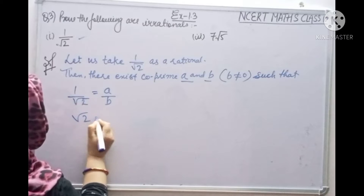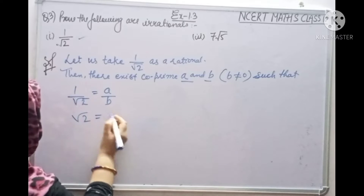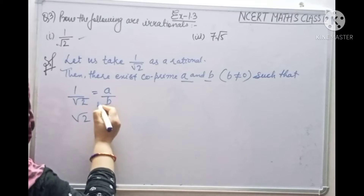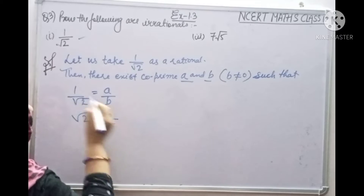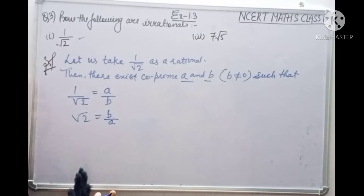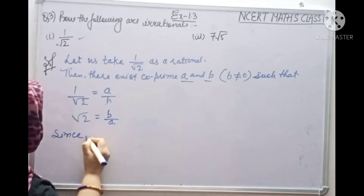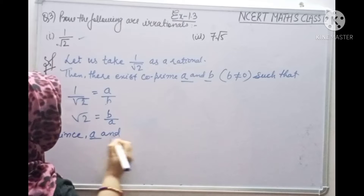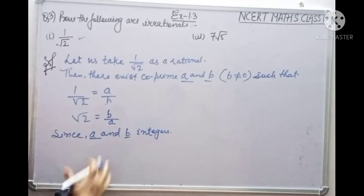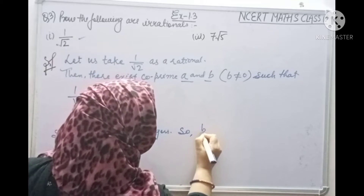By cross multiplication, root 2 is equal to B by A. Since A and B are integers, B by A is a rational number.